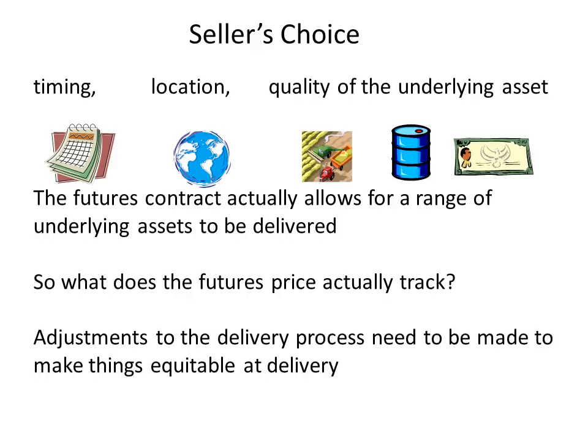In summary, the seller of the futures contract has a number of choices in terms of timing, location, and quality of the underlying asset. However, this creates a disadvantage for the buyer of the futures contract. The buyer therefore needs to be compensated somehow, so adjustments on futures delivery day are included to reflect these differences, ultimately making the delivery process totally equitable.